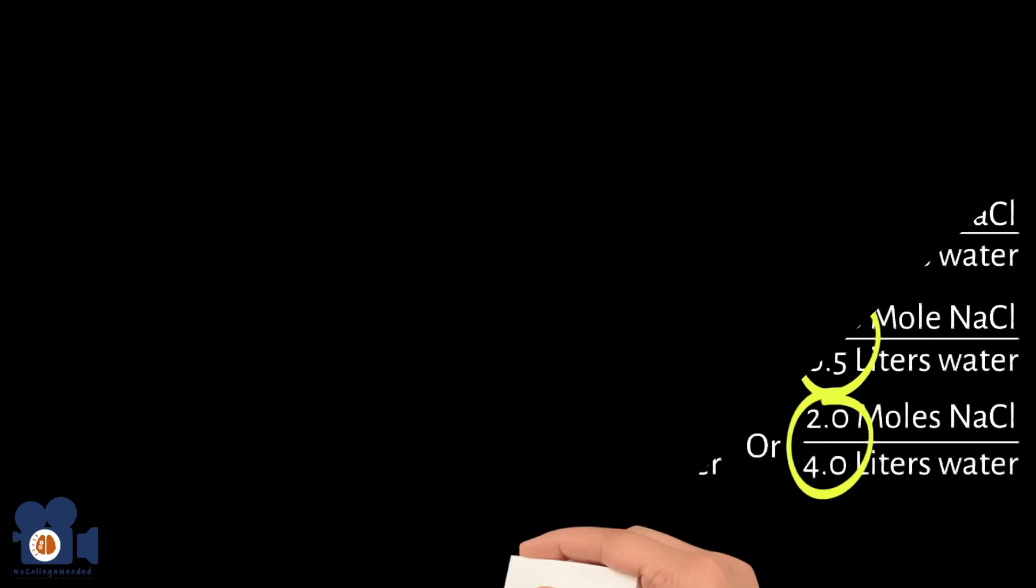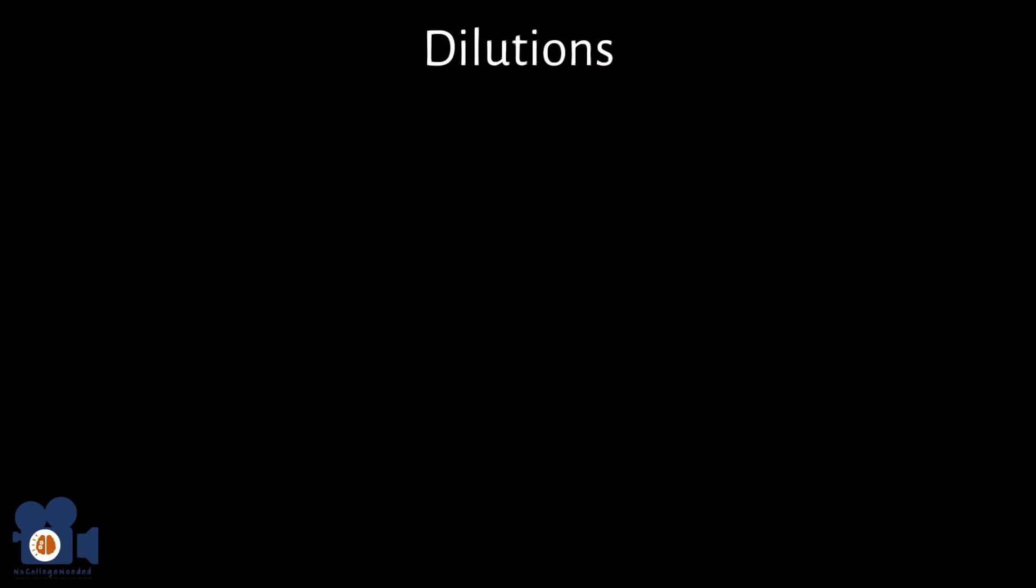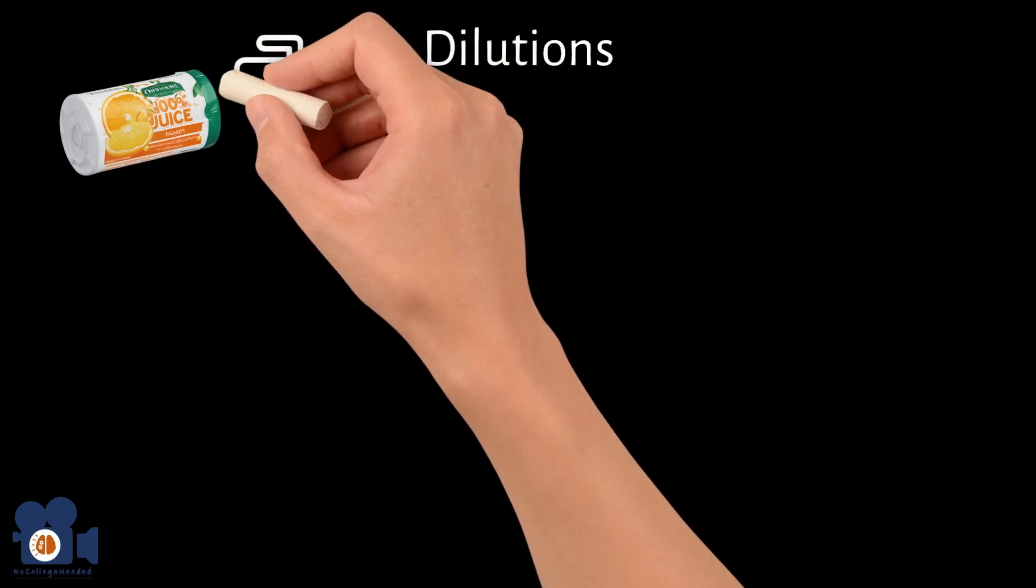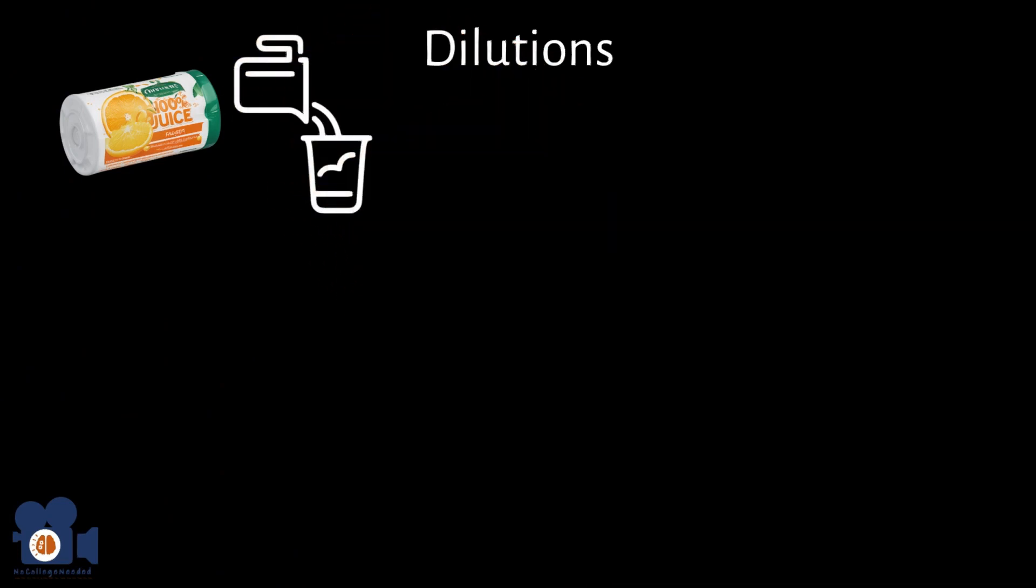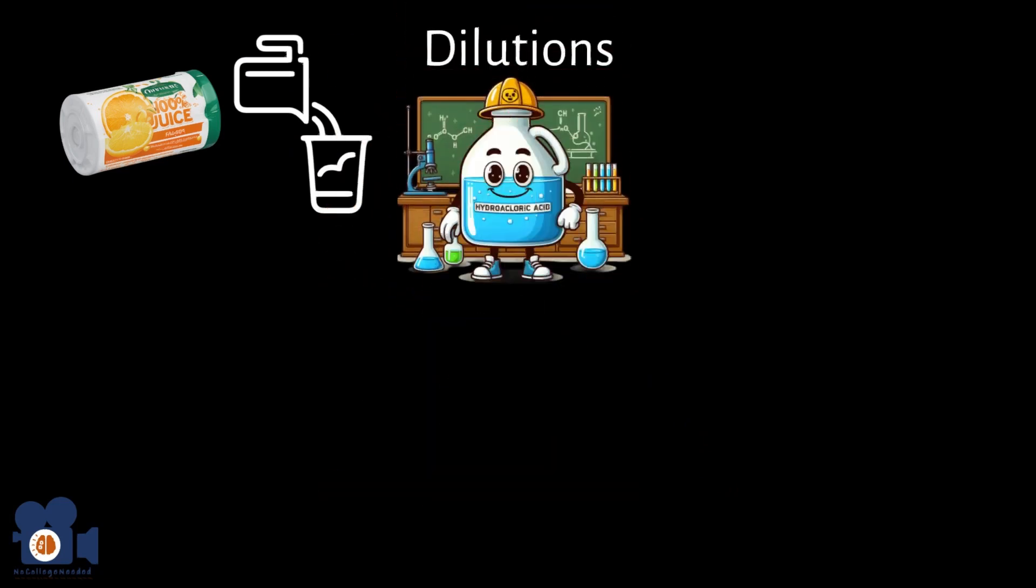This leads us into dilutions. Oftentimes, aqueous solutions are purchased in their concentrated form, similar to how frozen juices are. This is to save space, and you can just add water to dilute it to your preferred concentration. For example, hydrochloric acid, HCl, is often sold as a 12 molar solution.